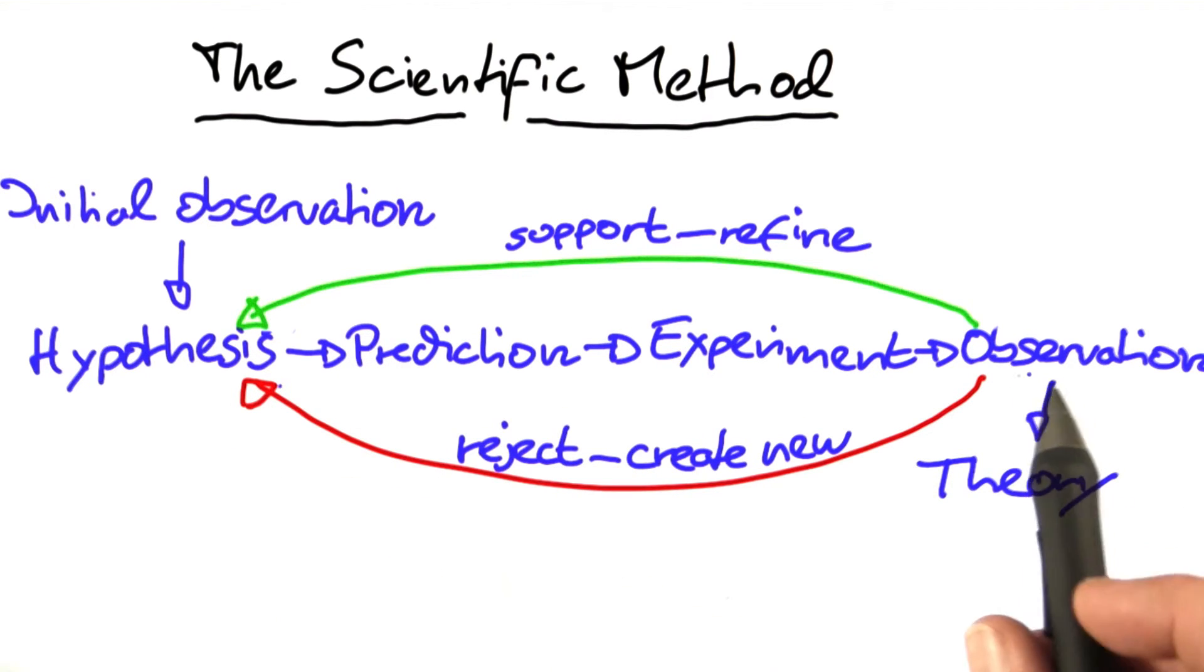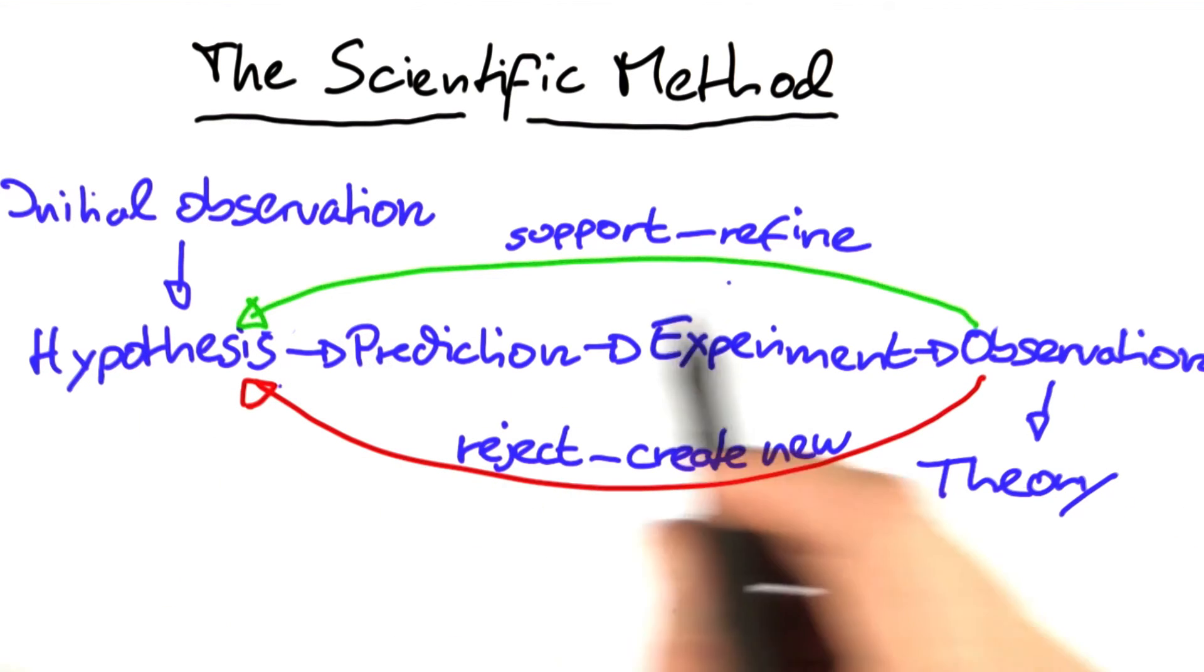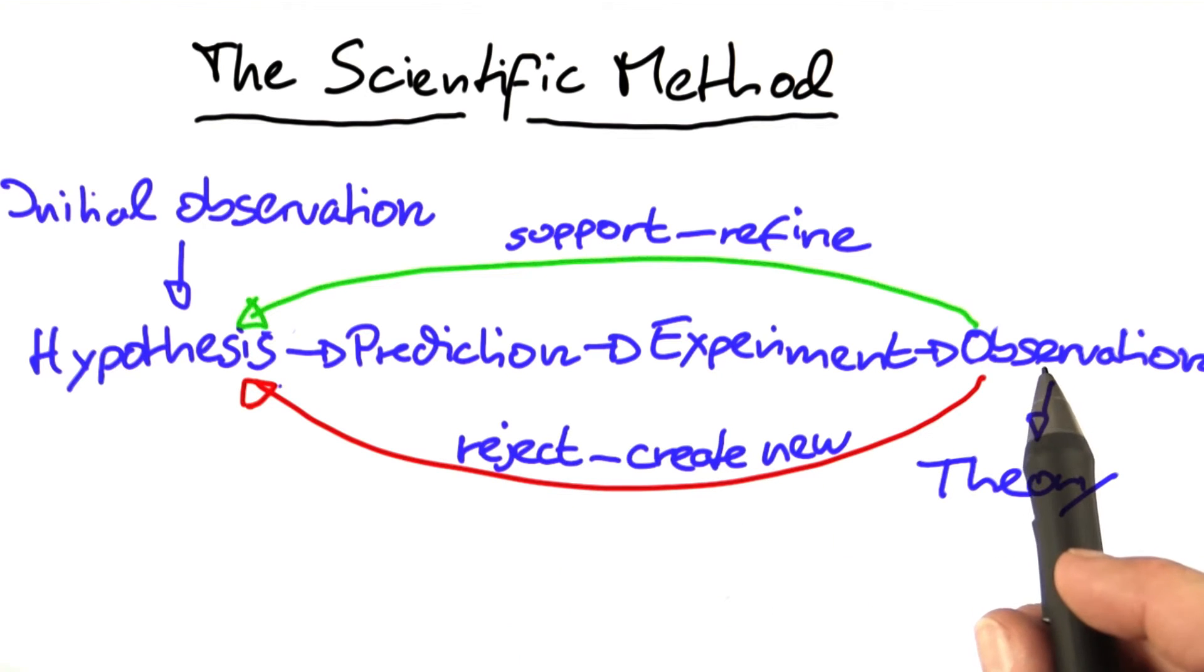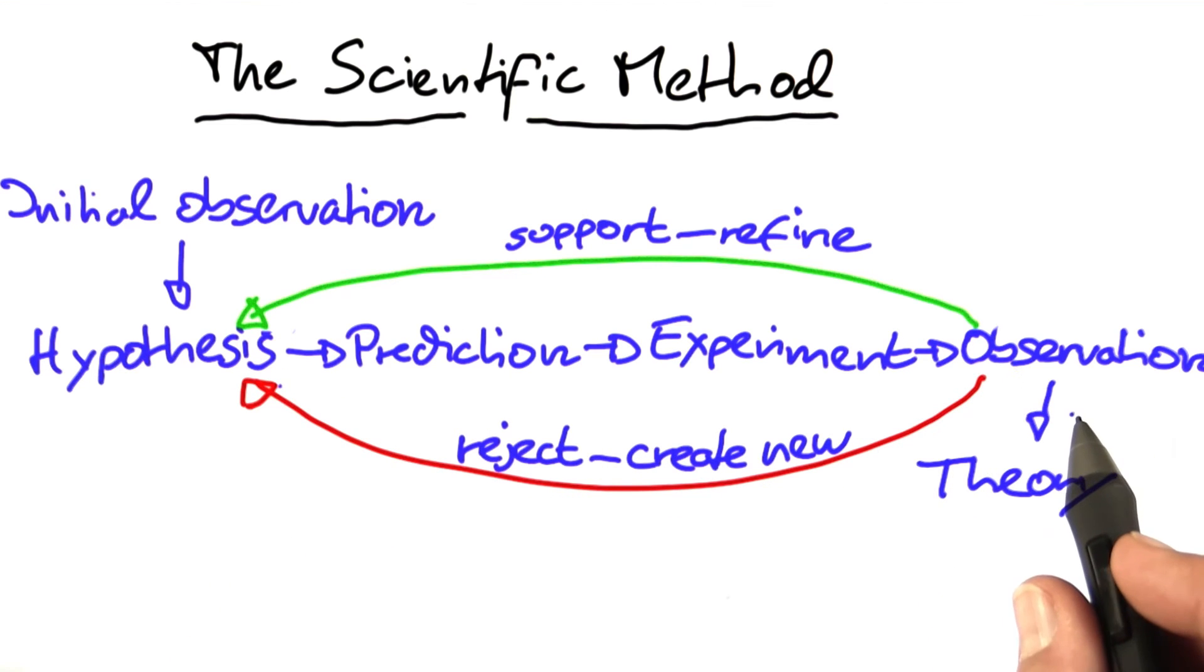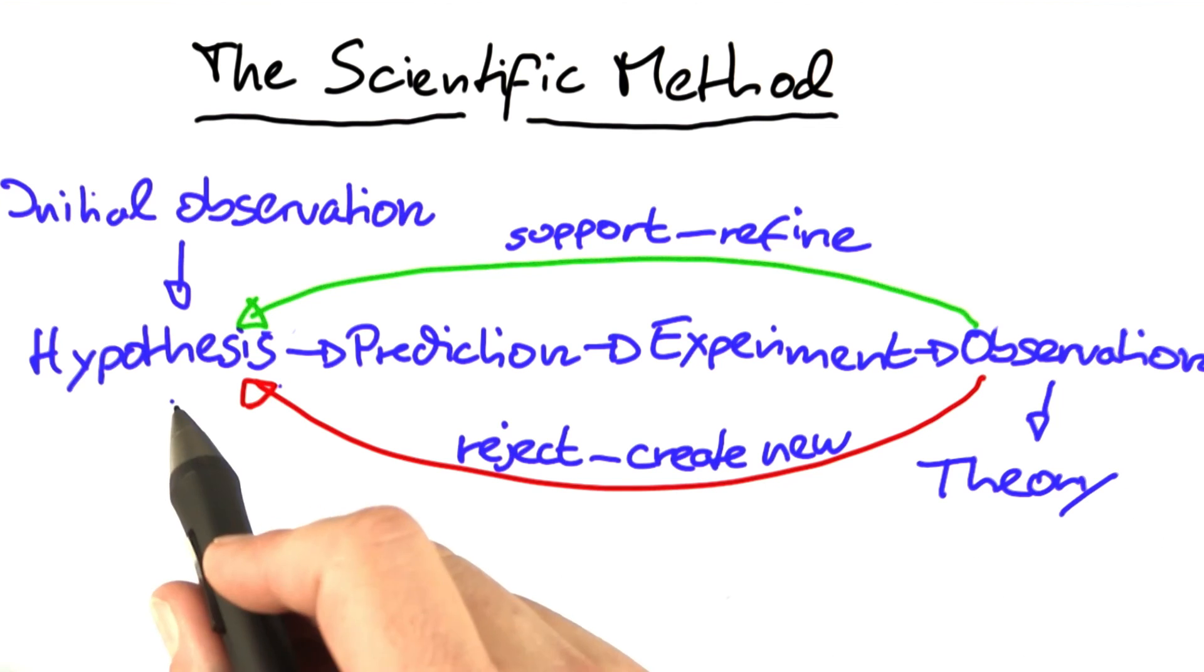In a theory, you repeat the process of refining the hypothesis through prediction, experiment, observation, or creating new hypotheses again, going through this circle again and again until your hypothesis becomes a theory—that is, a predictive and comprehensive description of some aspect of reality.